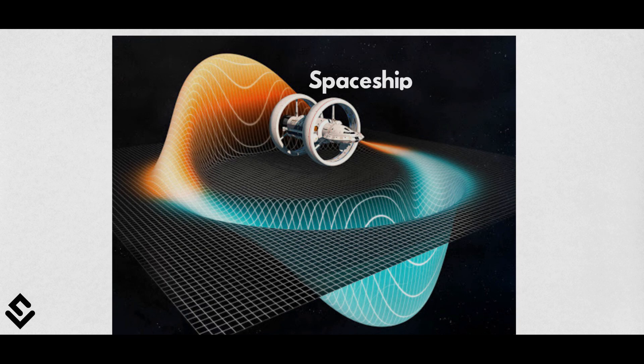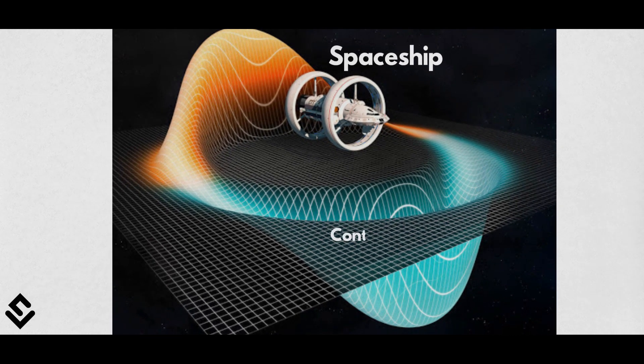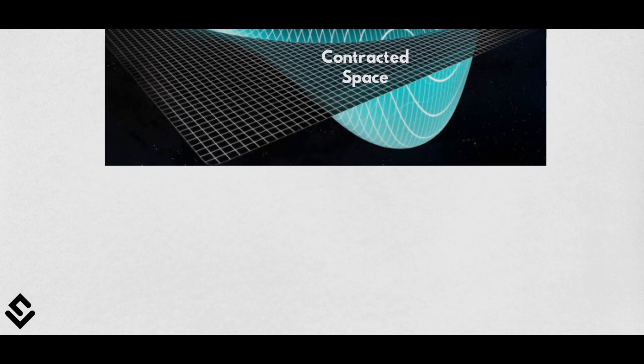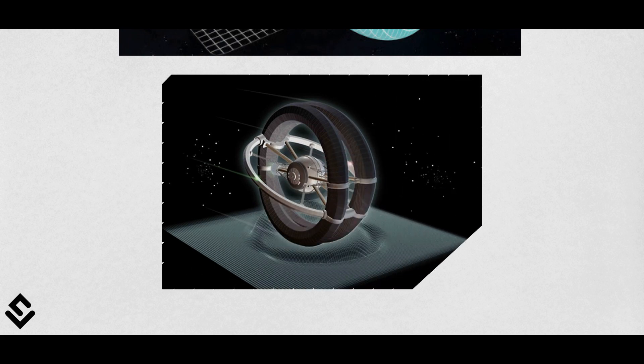Rather than increasing the speed of the spaceship, warp drive will contract the space in the front of the ship and expand the space behind the ship. This ship is enclosed inside the bubble of forward-contracting space and backward-expanding space.